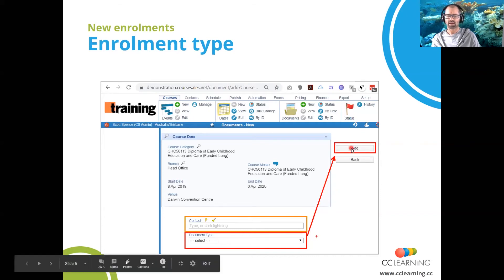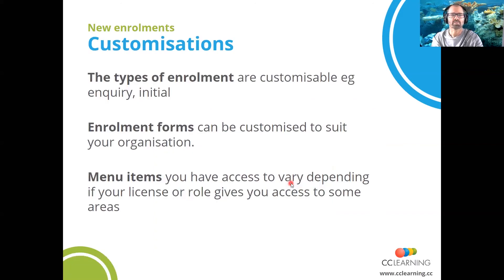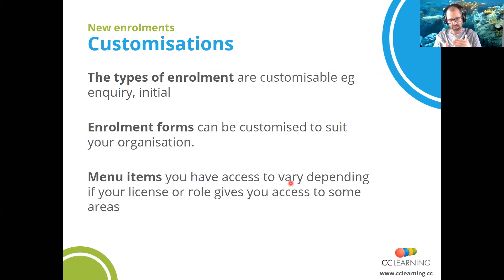Then you click on Add. With regards to customisations — there are different types of enrolment, such as inquiry or initial registration, and there are different enrolment forms which can be customised. Be prepared that some of the information you see here might be different to the way you have the system configured. Also, menu items can vary depending on your license, so those items in the ribbon can vary.